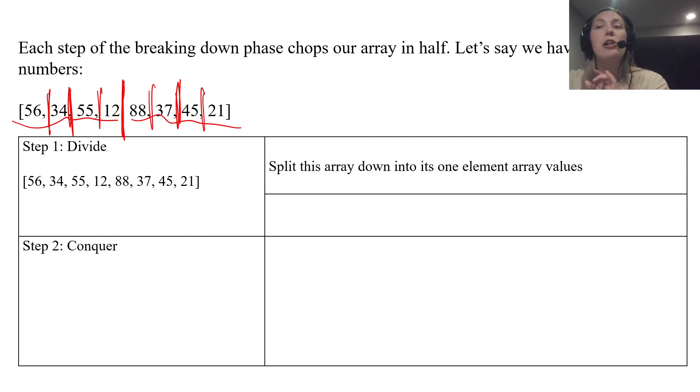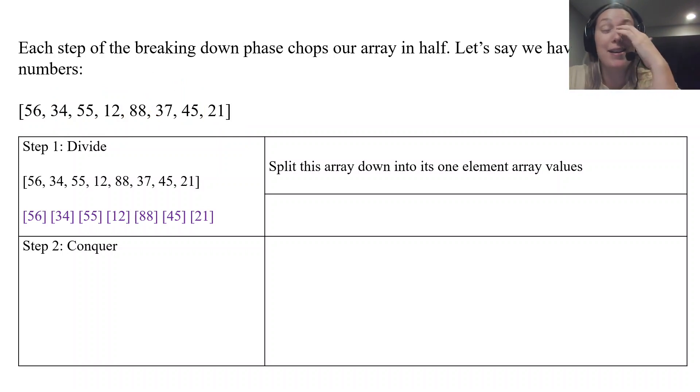It continues until it reaches single element arrays. This is what it looks like - there's no sorting going on during the divide portion, it just splits the array down into those sub-arrays. You can see here each number is its own array, and the recursive piece keeps doing that until every element, even if you have a thousand numbers in your array, is split into individual arrays.